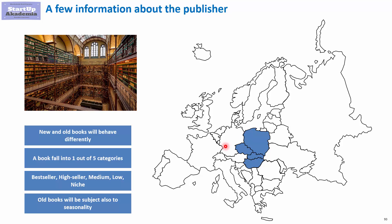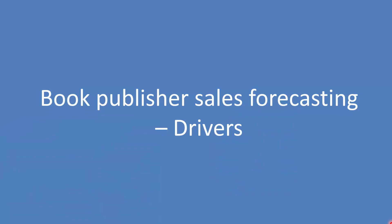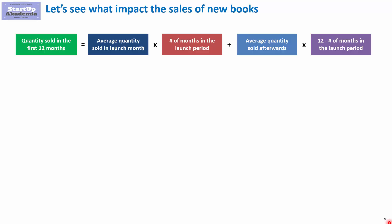Let's look at the drivers for a book publisher. He sells both novelties and old books, and they behave differently, so they will have different drivers. For new books, the quantity sold in the first 12 months depends on the average quantity sold in the launch month, which is drastically higher, and the duration of the launch period, which may be three, one, or six months.